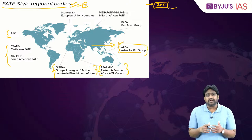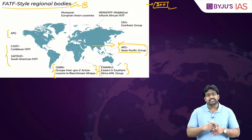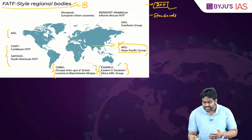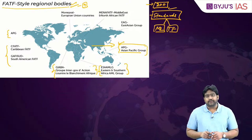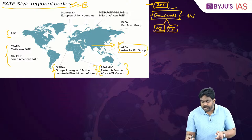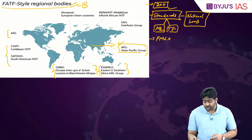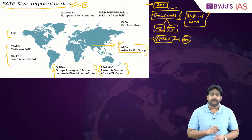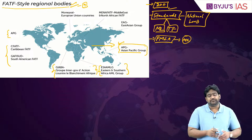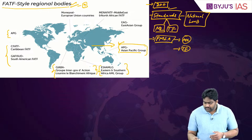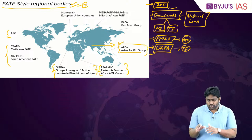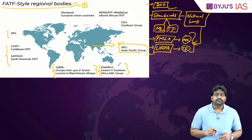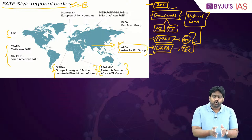FATF is essentially a policy-making body. It comes out with standards, policy measures, and recommendations to counter money laundering and terrorist financing. These standards prescribed by the FATF have to be adopted by respective countries in their national laws. For example, India has abided by the FATF standards by enacting the Prevention of Money Laundering Act. To counter terrorist financing, India amended the Unlawful Activities Prevention Act, which is India's primary legal weapon against terrorism.